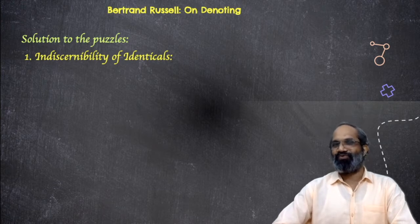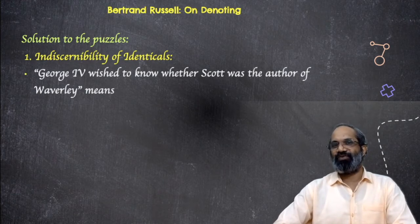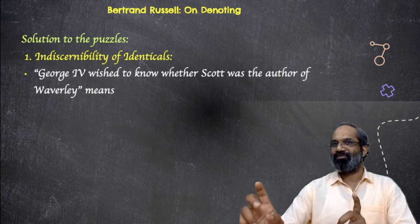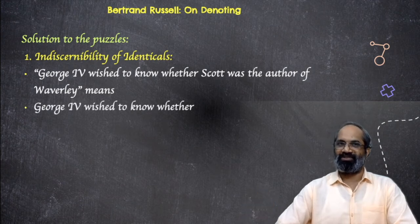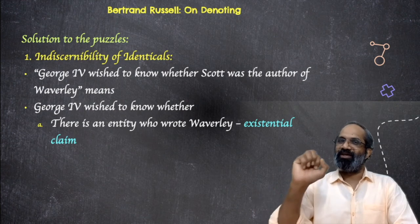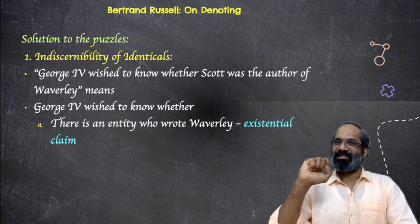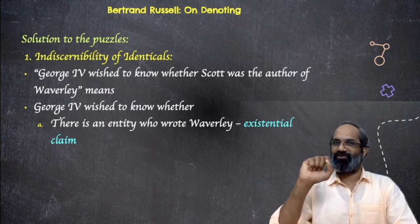Coming to the first case, that is about the indiscernibility of identicals, we have seen the statement: George IV wished to know whether Scott was the author of Waverly. Since Scott was the author of Waverly, the meaning of that statement becomes equivalent to George IV wished to know whether Scott is Scott. The definite description here is 'the author of Waverly,' and according to Russell's theory, there must be three claims in this definite description.